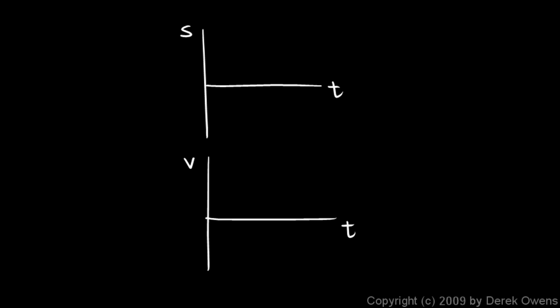Let's look at another example. Suppose we have an s versus t graph that looks something like this. It starts off curving and gets to a point where it's perfectly flat, and we'll mark this time right here where it finally gets flat. We draw these graphs one above the other so that a particular time on one graph is easy to correlate with the same time on the other. Now we want to draw our v graph such that the value of the v graph is equal to the slope of the s graph at any moment.